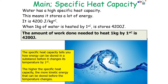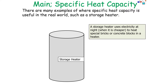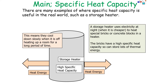For example, water has a high specific heat capacity — it's actually 4,200 joules per kilogram degrees Celsius. So when one kilogram of water is heated by one degree Celsius, it stores 4,200 joules. The higher the specific heat capacity, the more kinetic energy that can be stored before your temperature changes. A real-world example is a storage heater, which uses electricity at night when it's cheaper to heat special bricks or concrete blocks. The bricks have a high specific heat capacity so they can store lots of thermal energy, meaning they warm up slowly whilst being heated, and also cool down slowly when switched off, heating a room for a long period of time.